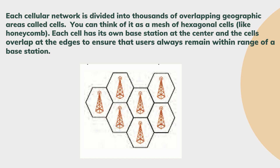This layout makes it possible to maintain a call as you travel out of one cell into another. The base station at the center of each cell acts as a network hub only for that cell, not for the entire network. Radio signals transmitted by a phone are received by the base station, where they are then retransmitted to another mobile phone. The base stations are connected to one another, and calls are automatically transferred from one base station to another as callers move between cells.